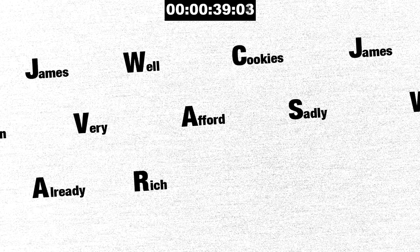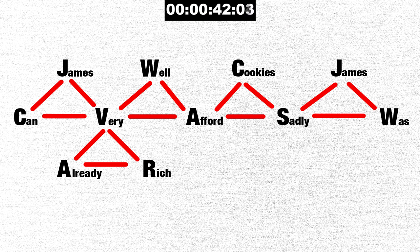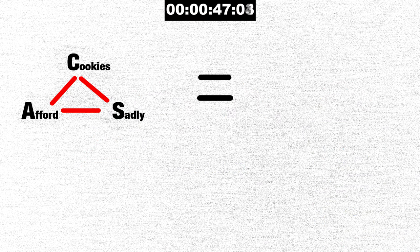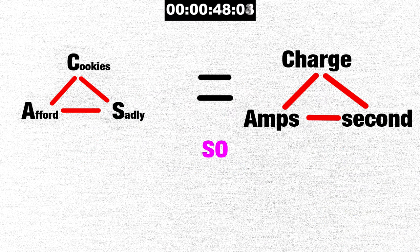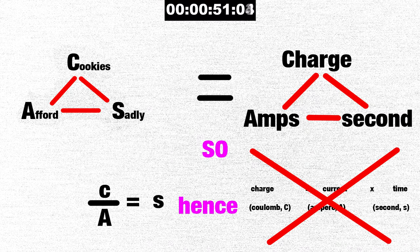This still doesn't mean anything. But if you connect them how you would connect your formula triangles, and you add this, these are your formulas. For example, if this equals to this, so this means this. Hence, we don't need to memorize what the formula means.